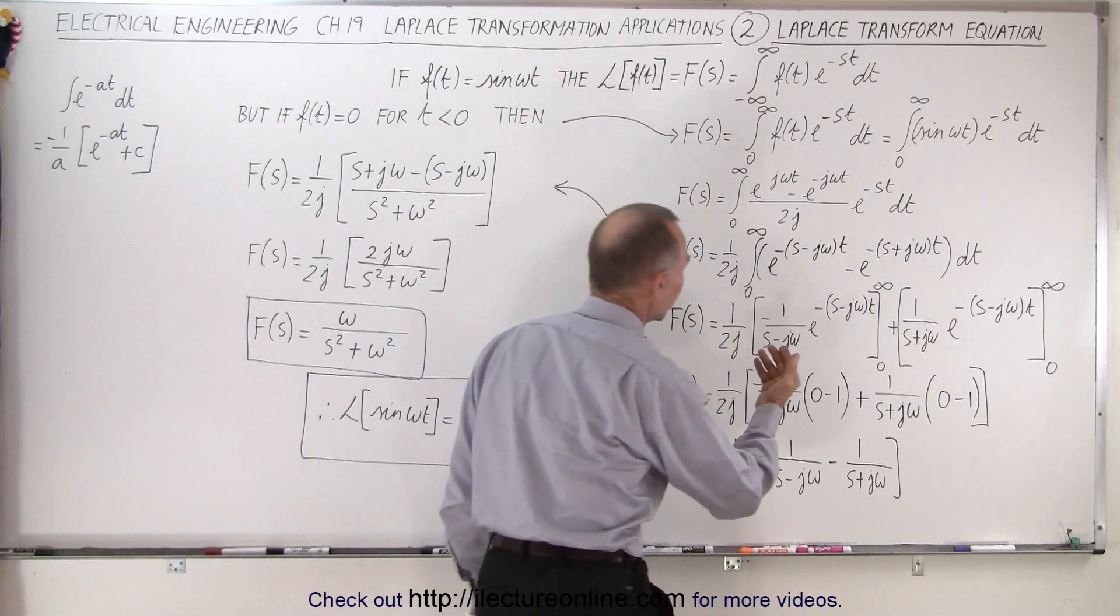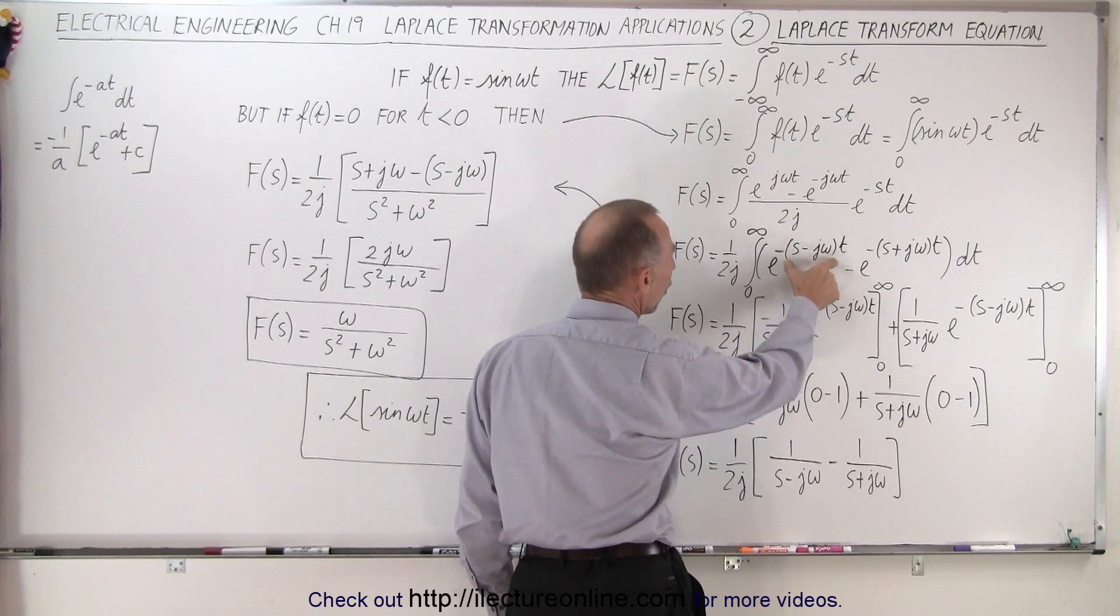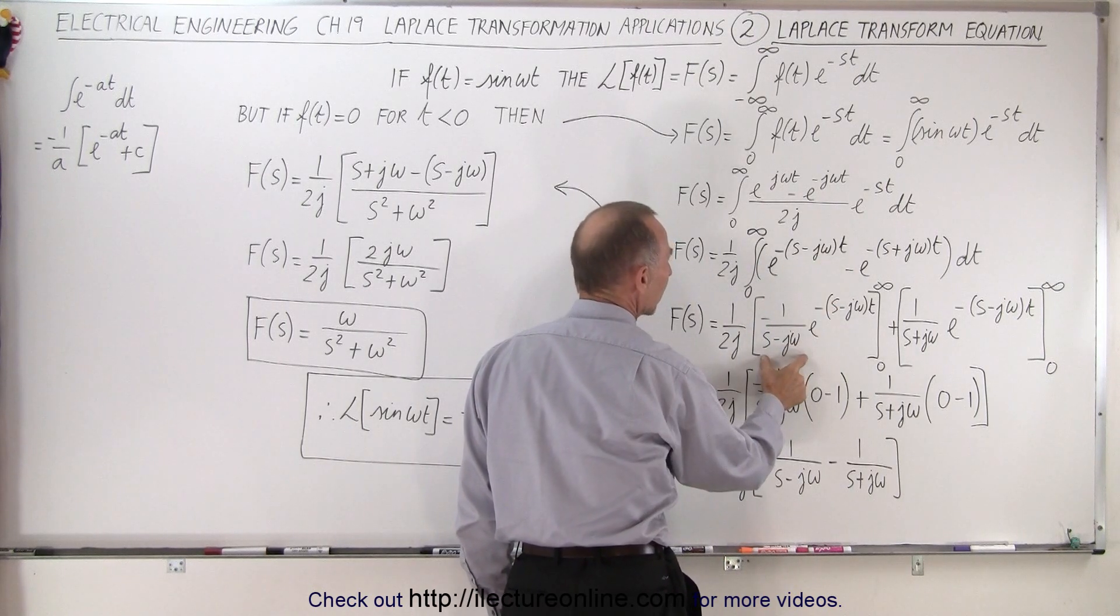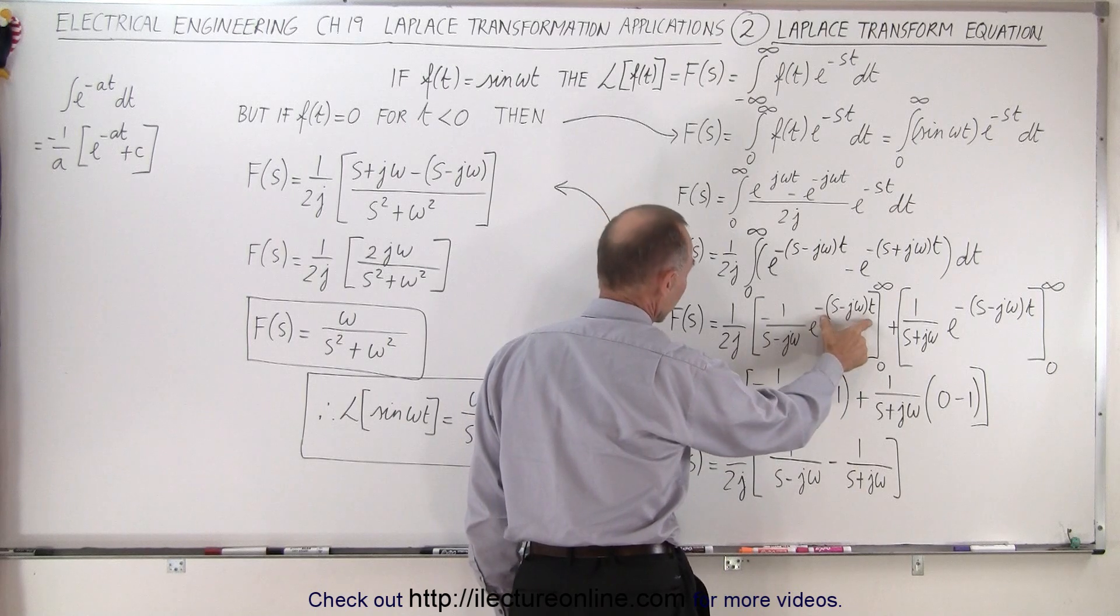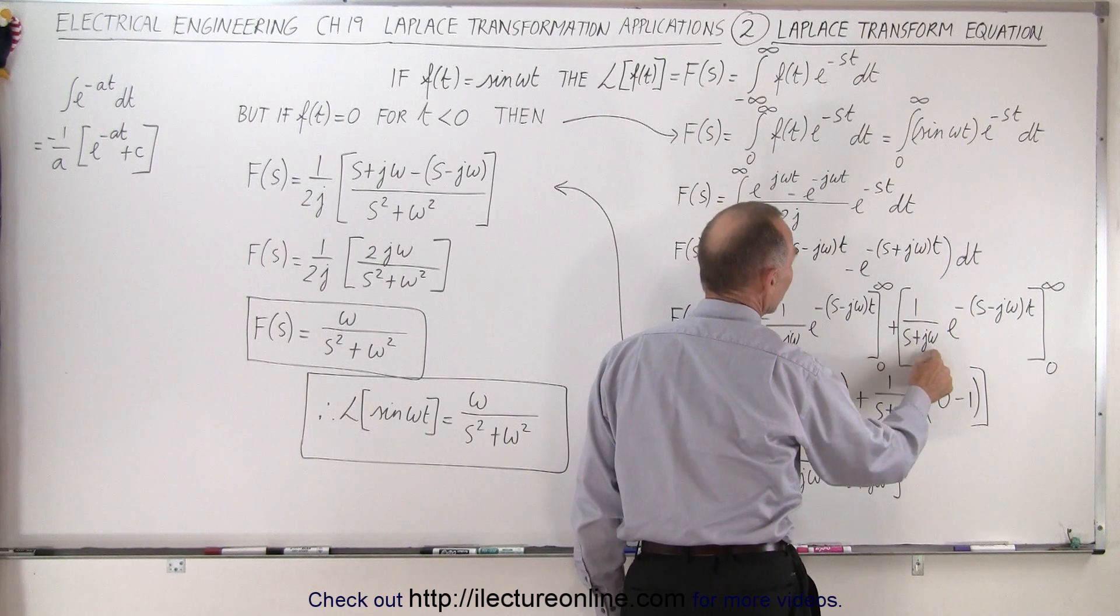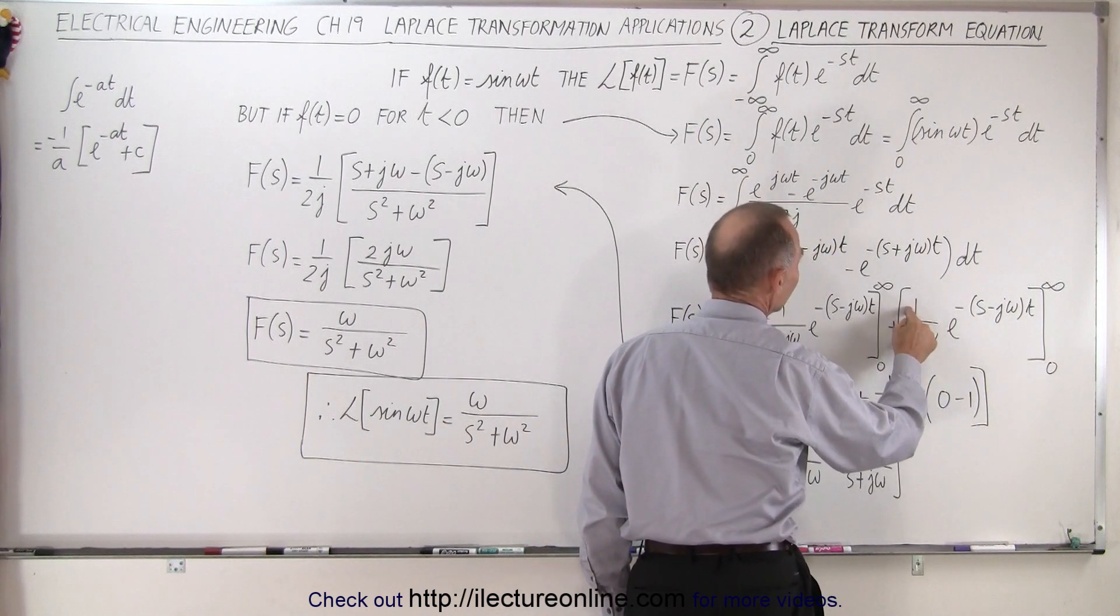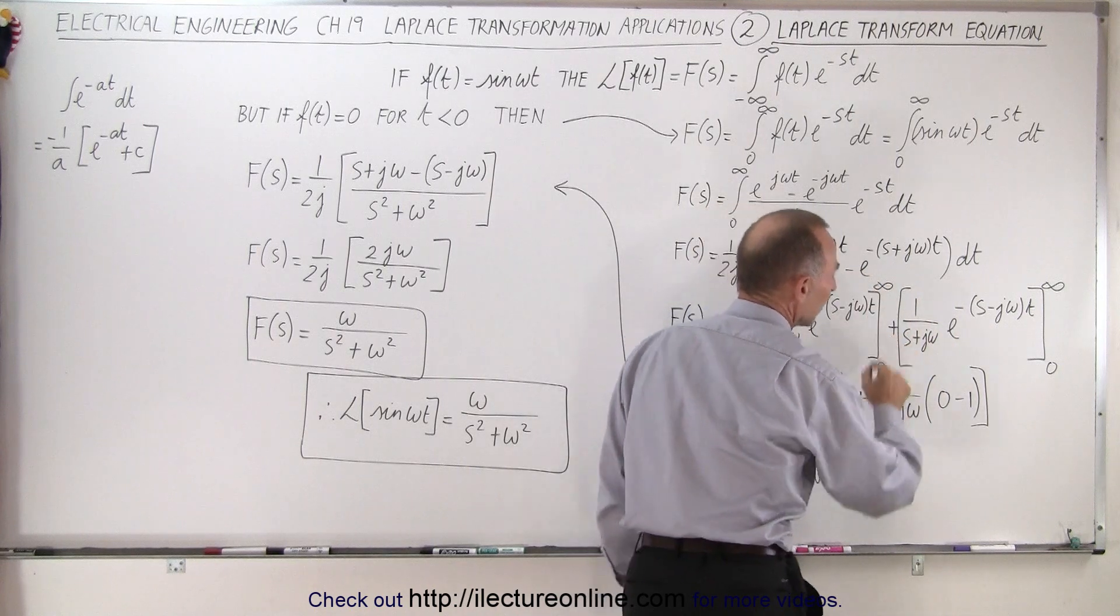So we use the same thing again. So here we see that if we are going to integrate this it will be negative 1 over s minus j omega times e to the same exponent, and then we have negative 1 over s plus j omega times e to the same exponent, because the negative then will cancel out the negative and it will become a positive negative.